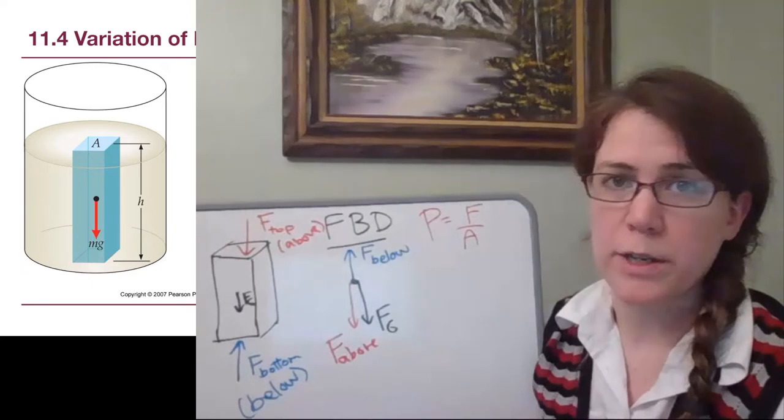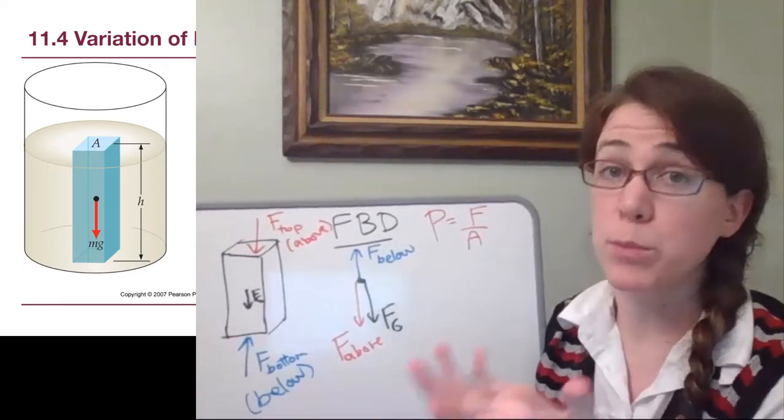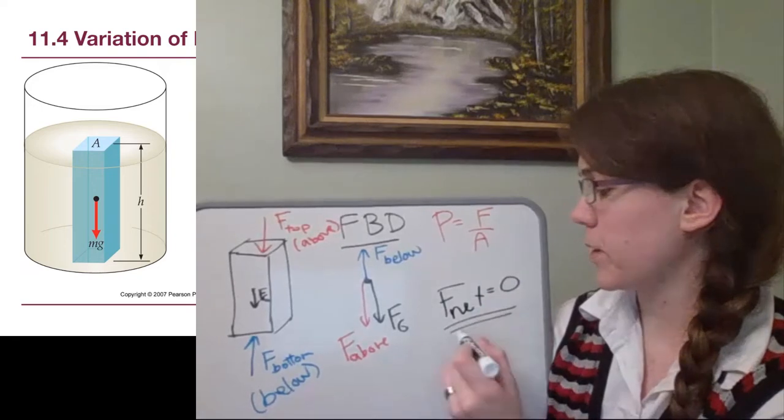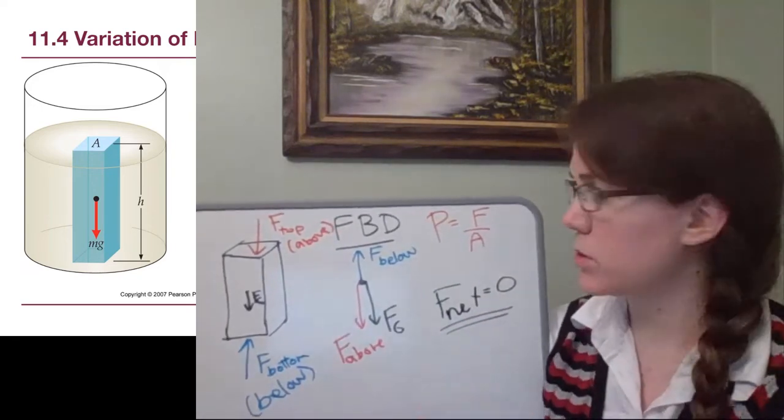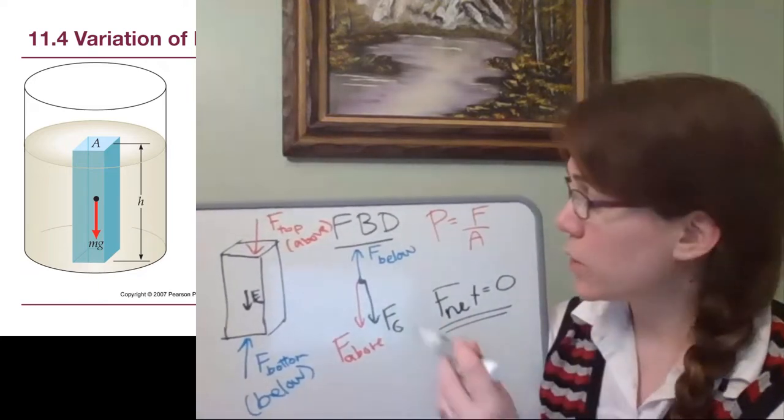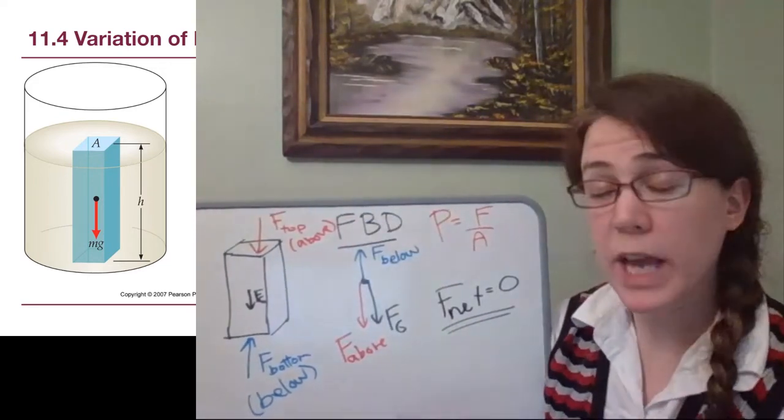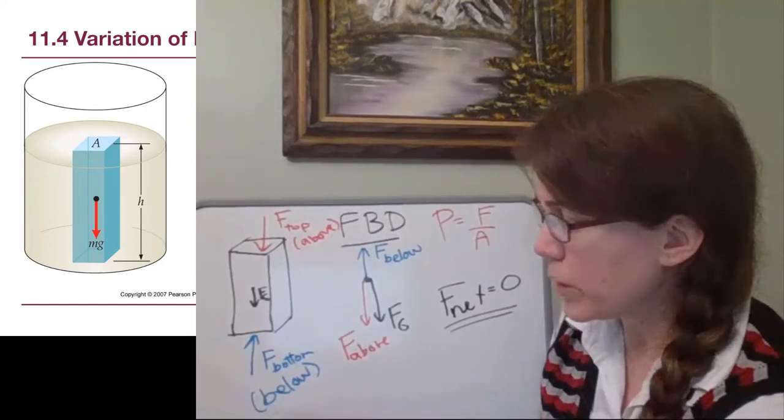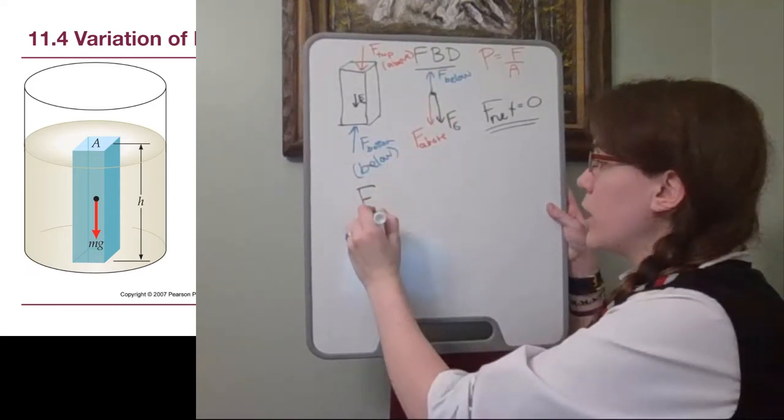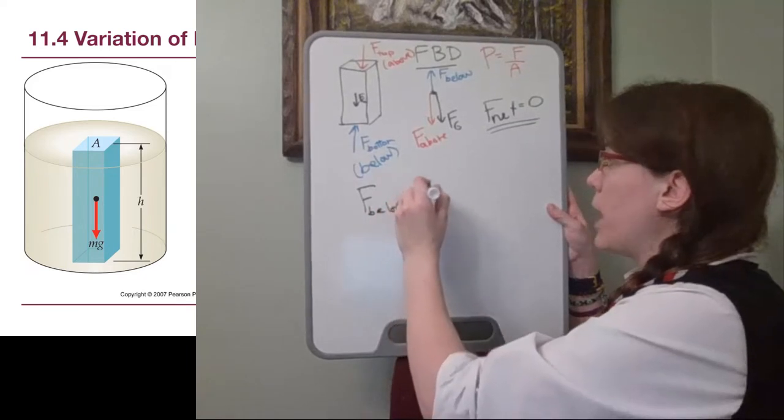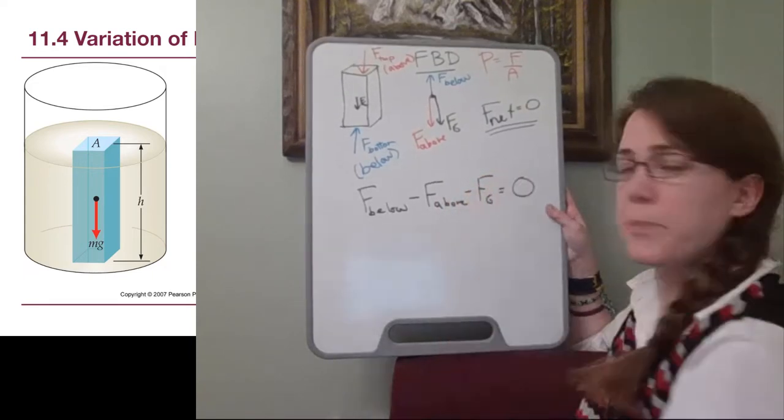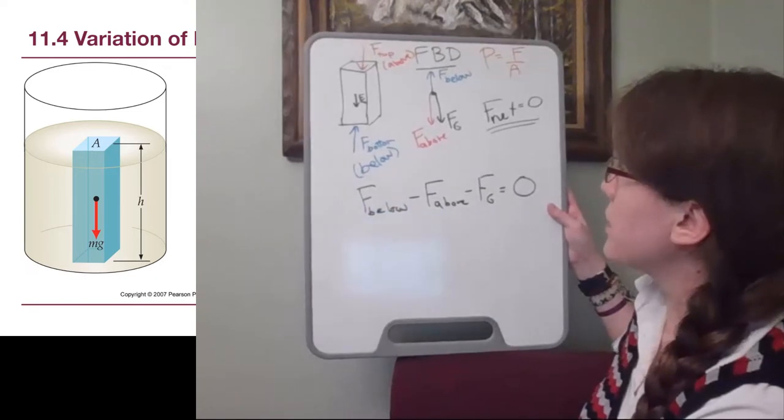If we imagine this water, and again it's part of a container of water and that whole container is not moving, because it's not moving the net forces are equal to zero. So far we really haven't used anything that's not from chapter four. So we can write out these forces, we have one up and two down, and they have to add up to zero. So we can write that the force below minus the force above minus gravity equals zero.